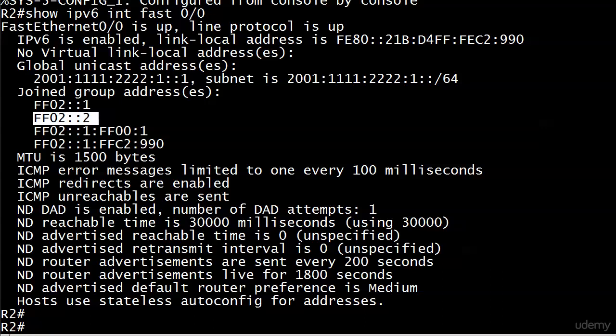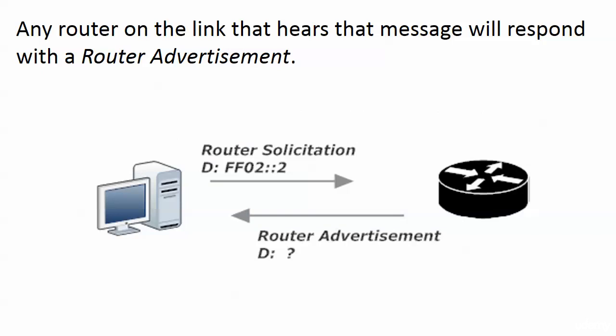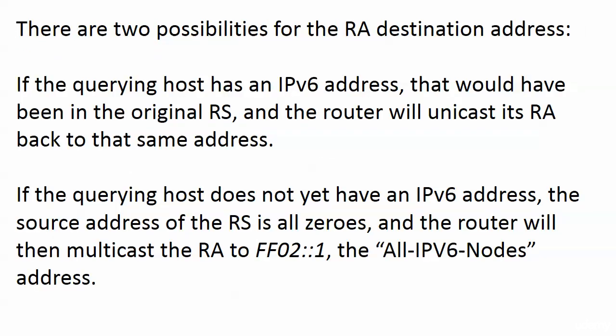FF02::2 is the all-IPv6-routers multicast address. When our host sends a Router Solicitation to FF02::2, it hopes a router answers. When a router on that link hears the RS, it answers with a Router Advertisement — an RA. The destination of the RA depends on whether the host already has an IPv6 address. If the querying host has an IPv6 address, that address was included in the original RS, and the router unicasts the RA back to that address.